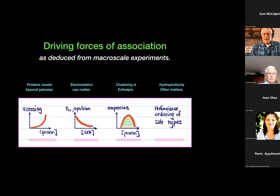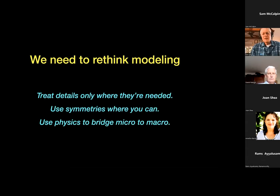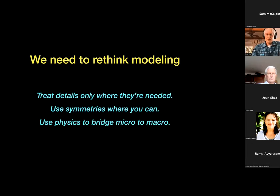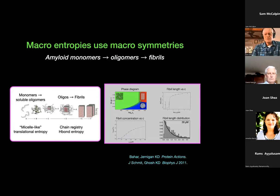You typically have temperature-protein phase diagrams with a critical point at the top, indicating attractive enthalpic interactions, and then Hofmeister effects, indicating some hydrophobicity. The question is how to build the modeling to do this. We want something that goes from the atomistic level all the way up to the macroscale. The idea is to treat details only where they're needed, use symmetries where you can, and use some kind of physics to bridge between the micro and the macro.